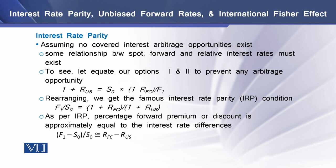We can also replace this equation for T time periods to determine the effect over a certain period of time. As per interest rate parity, the percentage forward premium or discount is approximately equal to the interest rate differences, as shown on the left-hand side of the equation. The right-hand side shows the difference in inflation rates between two countries — a domestic country and a foreign country.